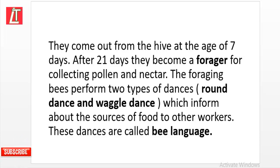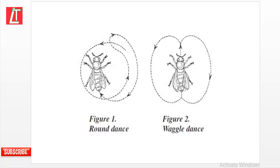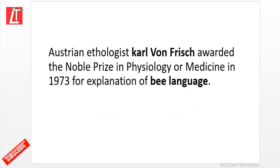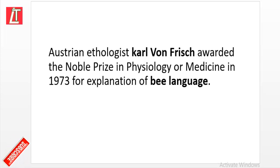Foraging bees perform two types of dances — the round dance and the waggle dance — which inform other workers about the sources of food. These dances are called bee language. Austrian ethologist Karl von Frisch was awarded the Nobel Prize in Physiology or Medicine in 1973 for his explanation of bee language.